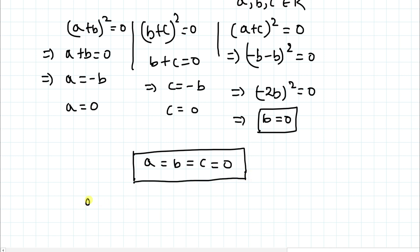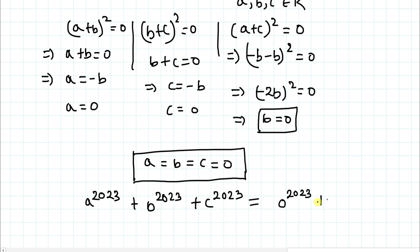We are asked to find a²⁰²³ + b²⁰²³ + c²⁰²³. Since each variable equals zero, we have 0²⁰²³ + 0²⁰²³ + 0²⁰²³ = 0. So the answer is zero. I hope you understood the solution — thanks for watching, please subscribe to my channel and click the bell icon for more such interesting videos!